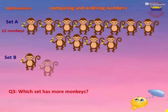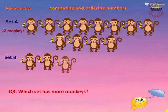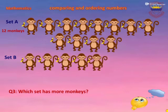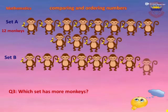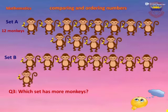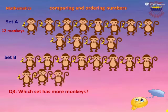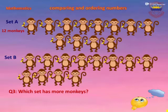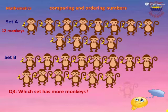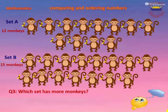Now let's count Set B: one, two, three, four, five, six, seven, eight, nine, ten, eleven, twelve, thirteen, fourteen, fifteen. In Set B there are 15 monkeys. So which set has more monkeys?